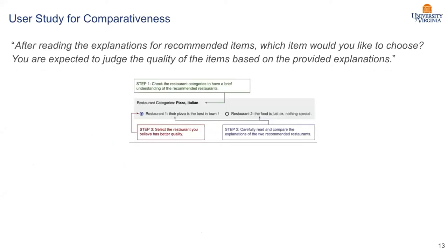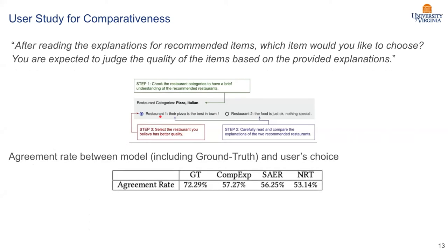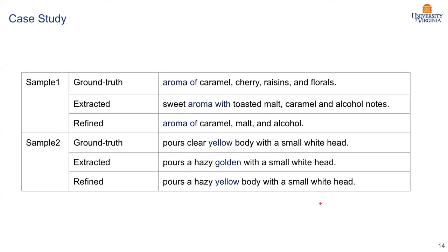Besides offline, we also did an online user study. We're basically trying to provide the explanation of two items and see if the user can really differentiate the ranking based on the explanations. We evaluate the human's agreement rate with this model predictor ranking. As you can see, our model can indeed improve the agreement rate. However, I want to highlight what's the ground truth, which is the original user review, which is much higher. This simply suggests that the original user provided reviews indeed are highly comparative, and users through these reviews can see the items ranking. Unfortunately, all existing, including us, still have a huge gap to improve.